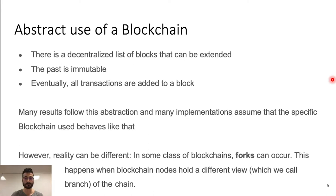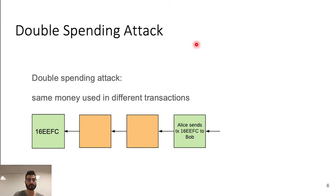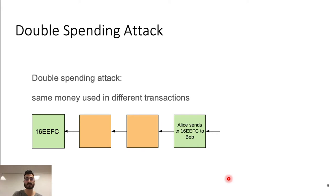Let's start by introducing a common issue called the double spending attack. In the double spending attack, the same money are used in different transactions. How does this attack work? Let's imagine that a player has a transaction containing some coins with this hash. Then the blockchain grows, and after that, this player, Alice, sends this transaction — the money containing this transaction — to Bob, with another transaction.